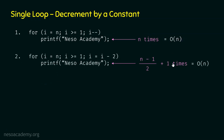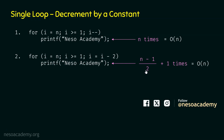It does not matter what constant we have in the update expression. When writing the asymptotic value using asymptotic notation, we mention only the dominating term. The dominating term here is N, so the time complexity is O(N). Comparing with the previous lecture where we had i = i + 2 instead of i = i - 2, we got the same value (N-1)/2 + 1. The minus sign makes no difference — the time complexity remains the same.